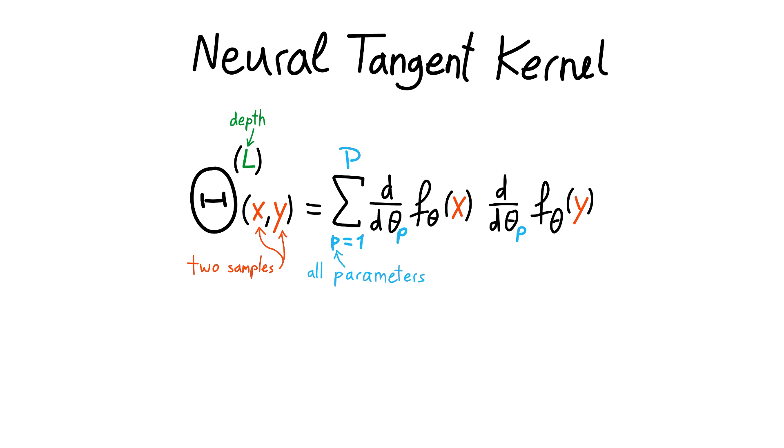What we have observed can be nicely described by a kernel, the neural tangent kernel. It is defined in terms of the derivative of the function with respect to the parameters, and it describes how modifying the network function at a point x will influence another point y.